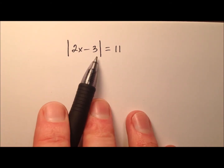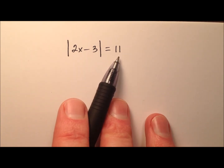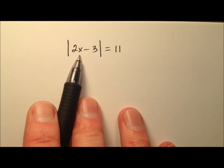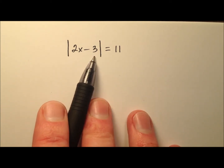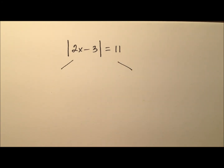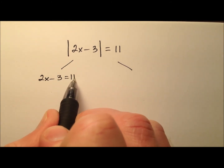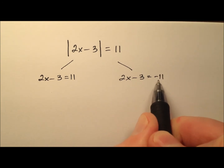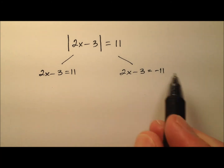We have the absolute value of 2x minus 3, and we're saying that equals 11. Remember, absolute value measures distance, so what we're saying is the distance is 11. That means this expression could have been positive 11 or negative 11, so I need to account for both situations. I'm going to split this up into 2x minus 3 equals positive 11, and 2x minus 3 equals negative 11, and solve each one independently.